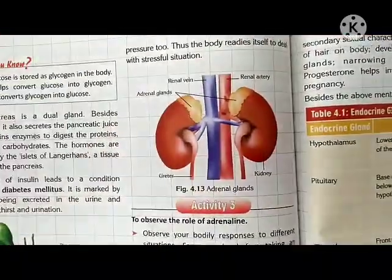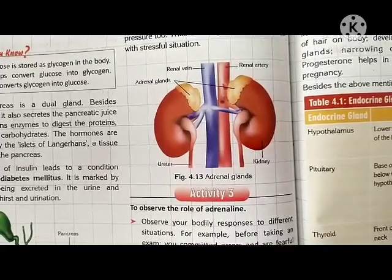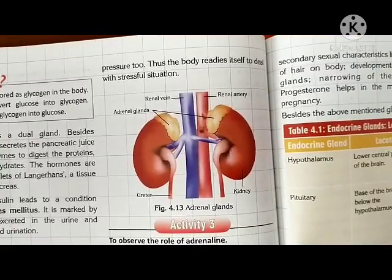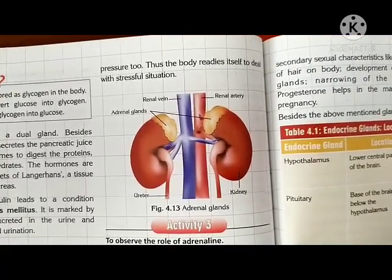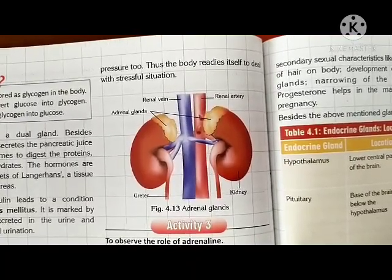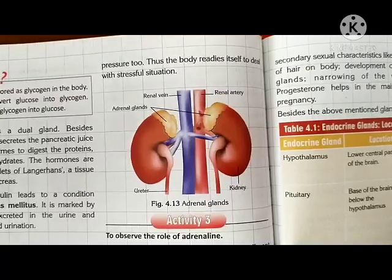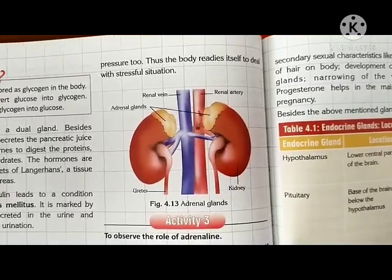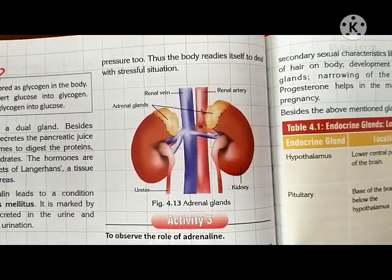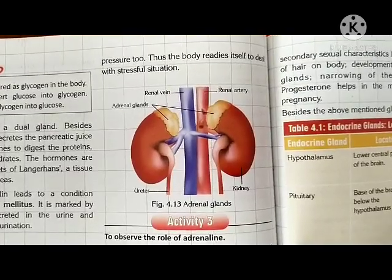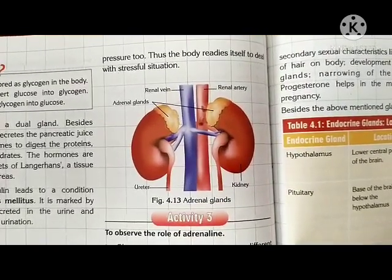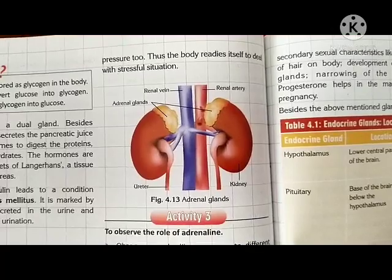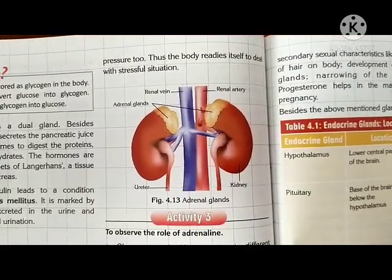The adrenal gland secretes the adrenaline hormone, which also increases blood pressure. Thus, the body readies itself to deal with stressful situations and fight them. In stressful situations, you may observe that your body starts shivering or your blood pressure becomes very high — that is because of the adrenal gland and the hormone adrenaline.